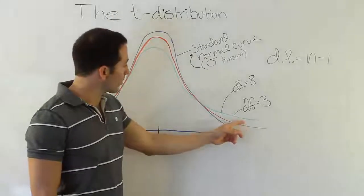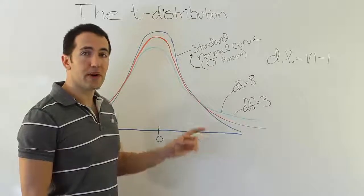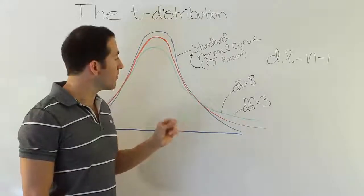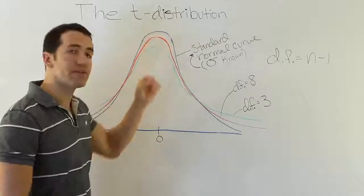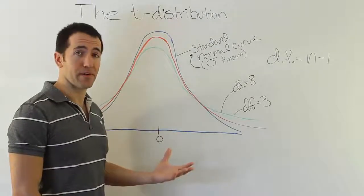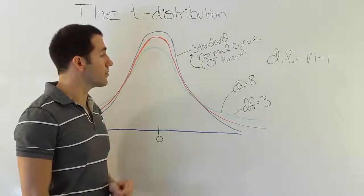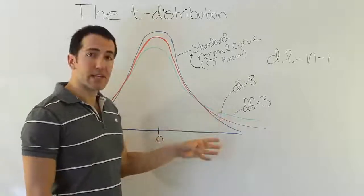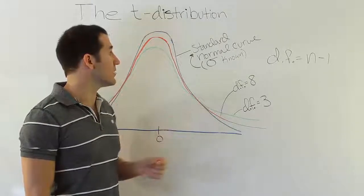Then you see two other curves, a red curve and a green curve. Those are actually examples of the t-distribution. But what I want to emphasize here is that there isn't just one t-distribution, there's a family of curves here that are associated with the t-distribution. And their shape, their exact shape, is actually dependent upon their sample size in this situation.